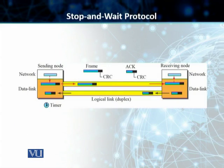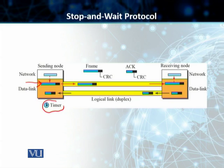Students, on the slide, what you see is we have a sending node. On the sending side, we have a network layer. From the network layer, we receive the packet, which comes down to the data link layer. The data link layer converts that into a frame, and it starts a timer, then sends this frame using CRC.